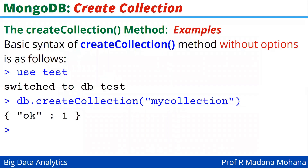Now let us see the basic syntax of the createCollection method without options. First, switch to whichever database you want — all collections you create will be stored in that database. For example, use test switches to the test database. Then using the command db.createCollection with just the name of the collection — for example, 'myCollection' — it returns OK: 1, meaning the collection is created successfully.